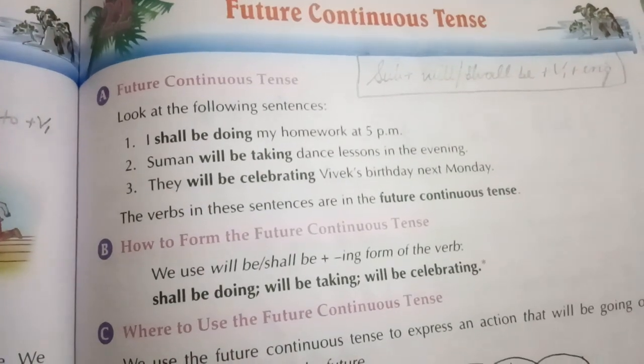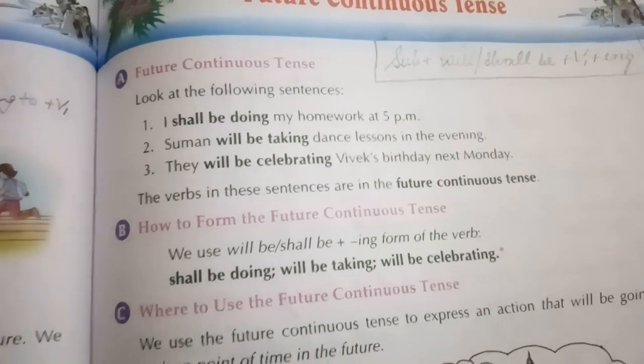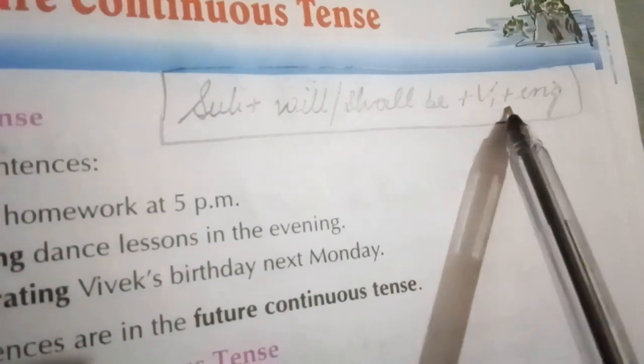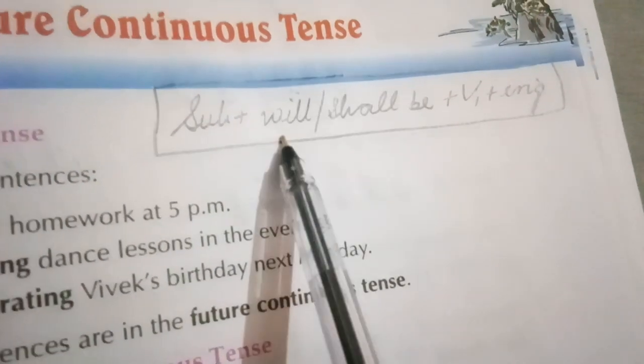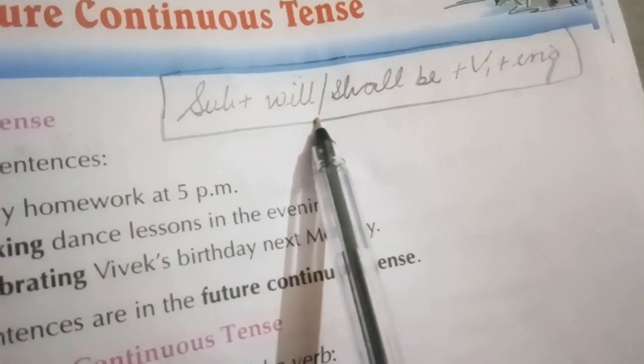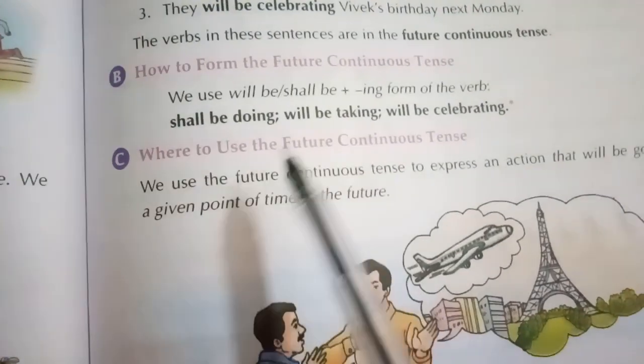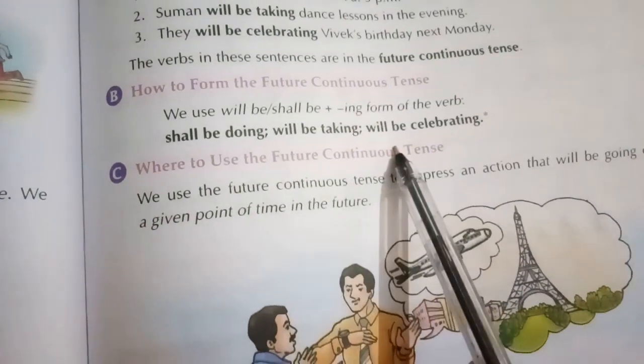The structure of future continuous tense is: Subject + will/shall + be + V1 + ING. I have given you all the structures in my previous video also. Now come to the exercises on the next page.